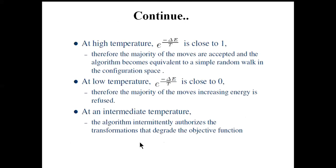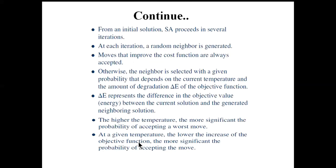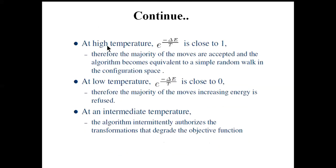During explanation of simulated annealing we stated that at higher temperature the probability of accepting a worse move is more significant. At high temperature, exp(−ΔE / T) is close to 1, meaning the probability value p is close to 1. Since the random value r lies between 0 and 1, this condition r < p is almost always satisfied, so the majority of moves are accepted.